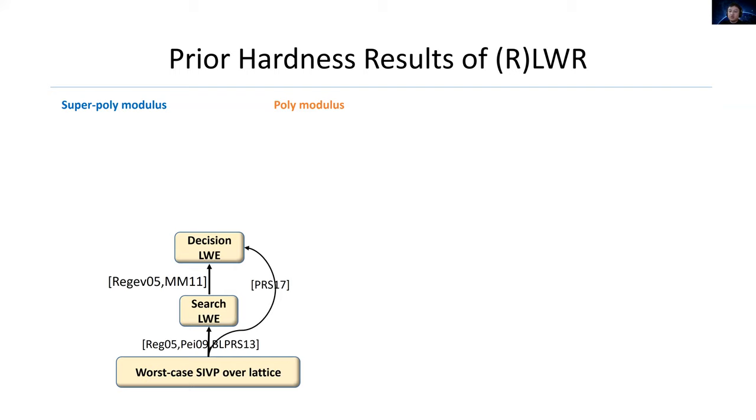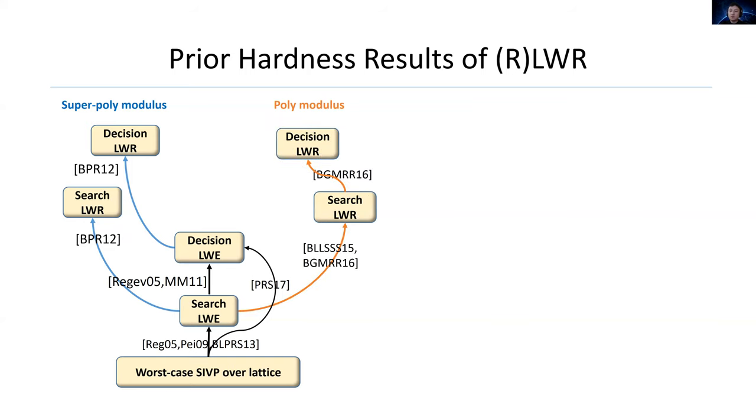Let's summarize prior hardness results of plain LWR and ring LWR by the following figures. More precisely, we consider the hardness of these problems in two cases: with superpoly modulus and with poly modulus. For plain LWR, the hardness results are more complete. First of all, we can show basic reduction line of LWR from prior works. There are simple reductions from search LWE to search LWR and decision LWE to decision LWR with superpoly modulus from the work BPR12.